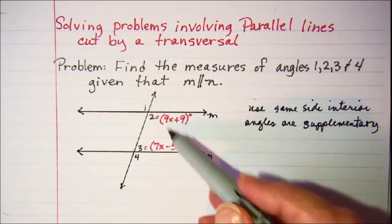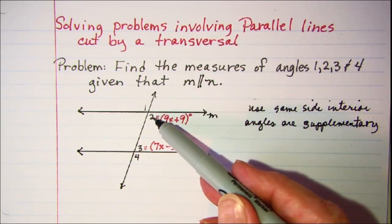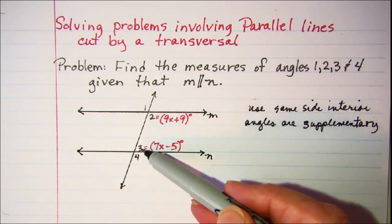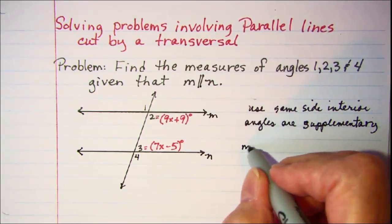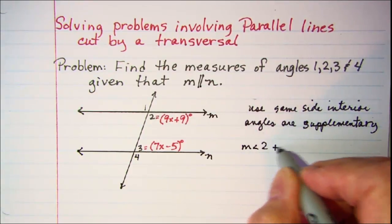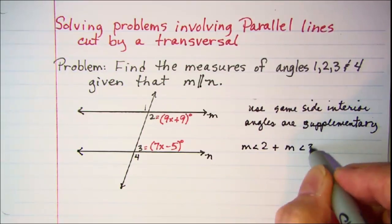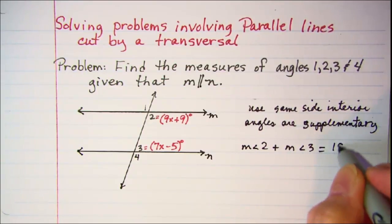So our same side interior angles would be angle 2 and angle 3. So the measure of angle 2 plus the measure of angle 3 is equal to 180 degrees.